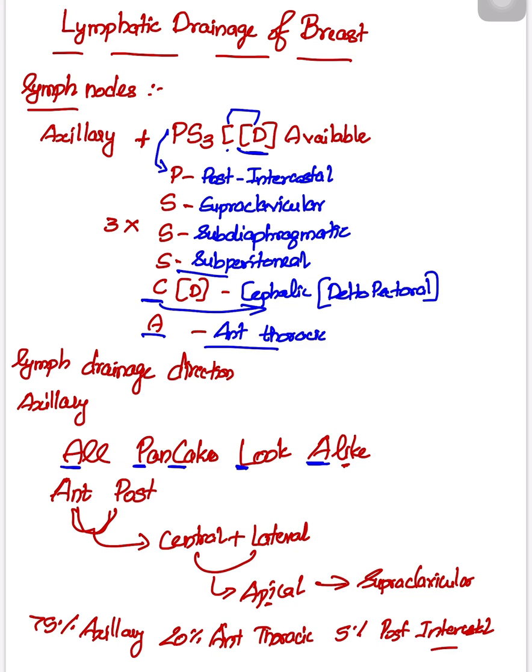already said, is the axillary group. Within the axillary group, we have five types of lymph nodes. What are those? The mnemonic for that is 'All Pancakes Look Alike.'